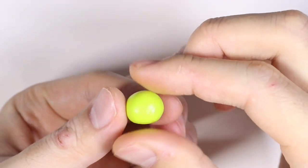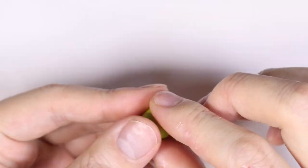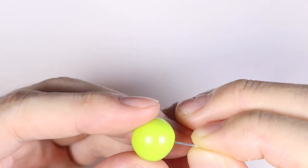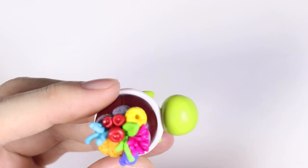For the turtle head, we're going to take a ball of green clay, flatten it out slightly, and pinch it into a chubby triangle shape. I'm putting a little piece of wire on it just so we can attach the body with a bit more stability.